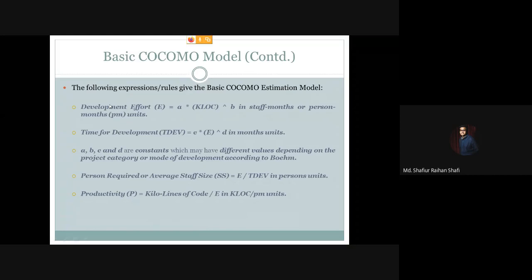Using the nominal effort, we calculate the time for development, which is called TDEV. TDEV is calculated using the rule: TDEV = c × E^d, where c and d are constants and E is the development effort. The total result will be in terms of a time unit, most often months.